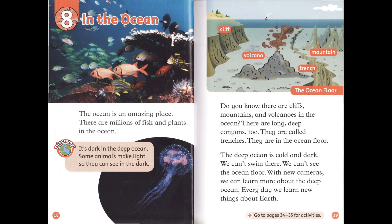Chapter 8: In the Ocean. The ocean is an amazing place. There are millions of fish and plants in the ocean. It's dark in the deep ocean — some animals make light so they can see in the dark. Do you know there are cliffs, mountains, and volcanoes in the ocean? There are long, deep canyons, too. They are called trenches. They are in the ocean floor.